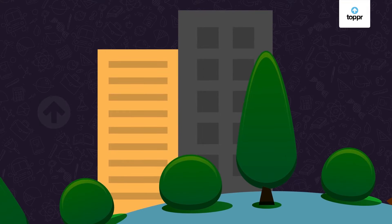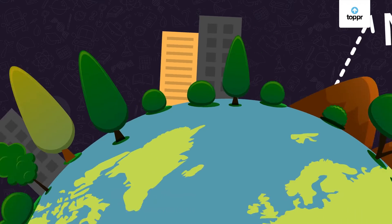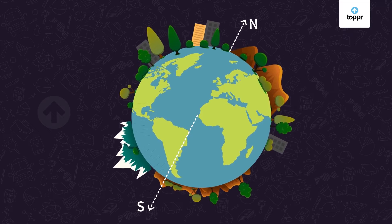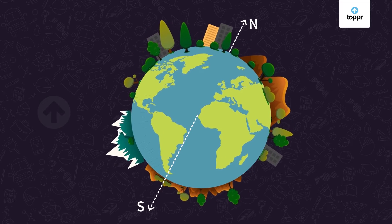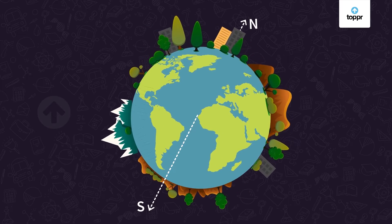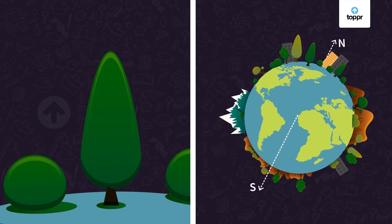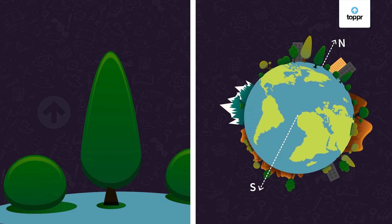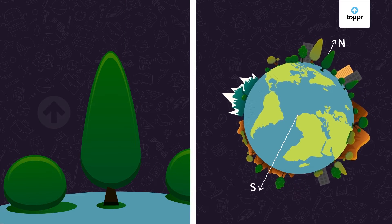So we have seen that the same person can appear to be at rest for one observer and in motion for another observer. Even stationary things like trees or buildings, which always appear to be at rest, are actually moving constantly. If you observe from outside the earth, you can see that the earth is moving, and so are the trees and buildings with it.